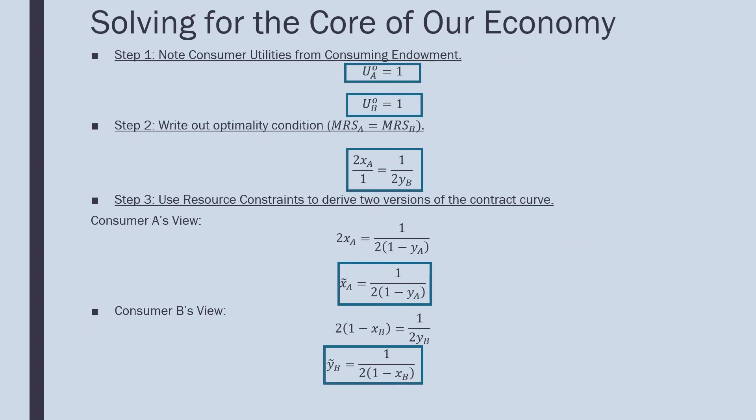Step one: note consumer utilities from consuming the endowment. That's just one and one. Step two: write out optimality conditions. The marginal rate of substitution for consumer A equals the marginal rate of substitution for consumer B, which is 2X_A equals 1 over 2Y_B.